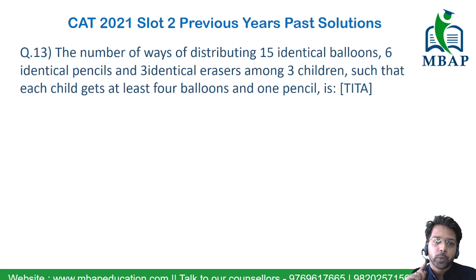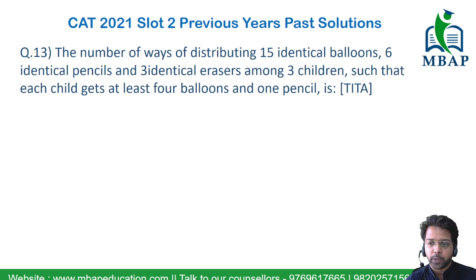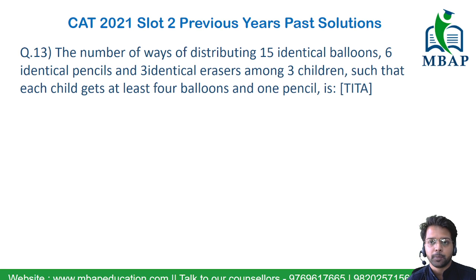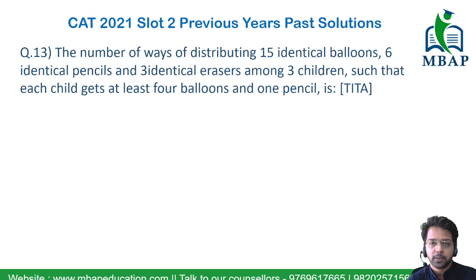The question says: the number of ways of distributing 15 identical balloons, 6 identical pencils, and 3 identical erasers among 3 children, such that each child gets at least 4 balloons and 1 pencil.